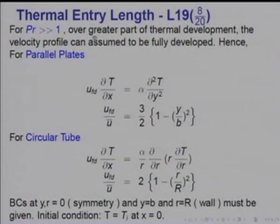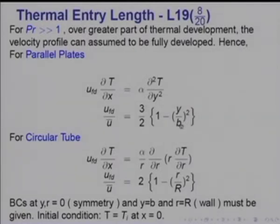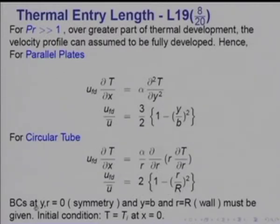Now we turn our attention to oils — Prandtl number very much greater than 1. As I said, over the greater part of the thermal development length the velocity profile can be assumed to be fully developed. Hence for parallel plates, for example, it will be u_fd · dT/dx = α · d²T/dy². u_fd/u-bar equals (3/2)(1 - (y/b)²), where b is the half distance between the two plates. For a circular tube it will be u_fd · dT/dx = (α/r) · d/dr(r · dT/dr), and u_fd/u-bar = 2(1 - (r/R)²). The boundary conditions are at the symmetry plane y=0 or r=0, the wall condition at y=b or r=R, with the inlet condition T = T_i at x = 0.